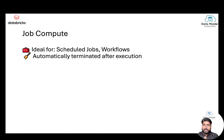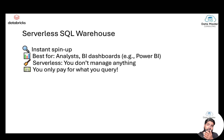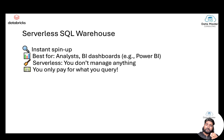Job compute is used for automation — for scheduled jobs, task orchestration, triggering, and workflows. The job compute turns on, does the work, and then terminates automatically after execution. Then we have a third type called serverless. With serverless, as the name indicates, you are not managing any servers — Databricks manages everything. You don't need to worry about driver configuration, number of workers, or cores. It spins up immediately, in about five seconds, compared to four to five minutes for all-purpose or job compute.